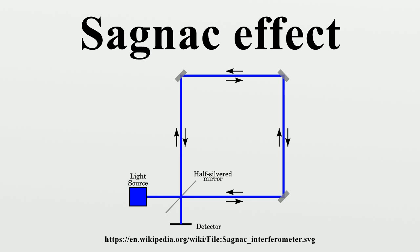The Sagnac effect in a circular loop can be understood on an intuitive level as follows. When the loop is rotating, the point of entry-exit moves during the transit time of the light. The backwards-propagating beam covers less distance than the forwards-propagating beam and arrives earlier. This creates a shift in the interference pattern. The shift of the interference fringes is thereby proportional to the platform's angular velocity.